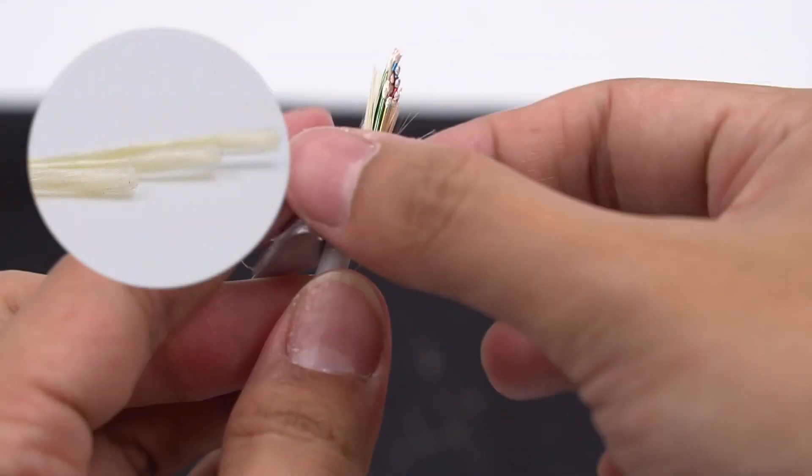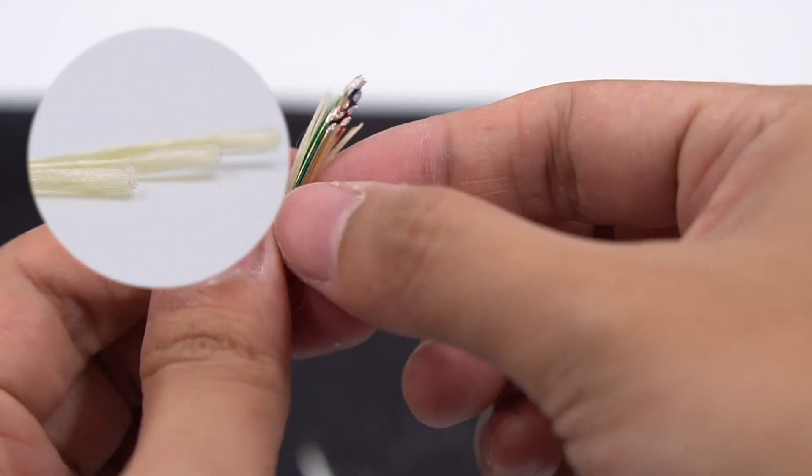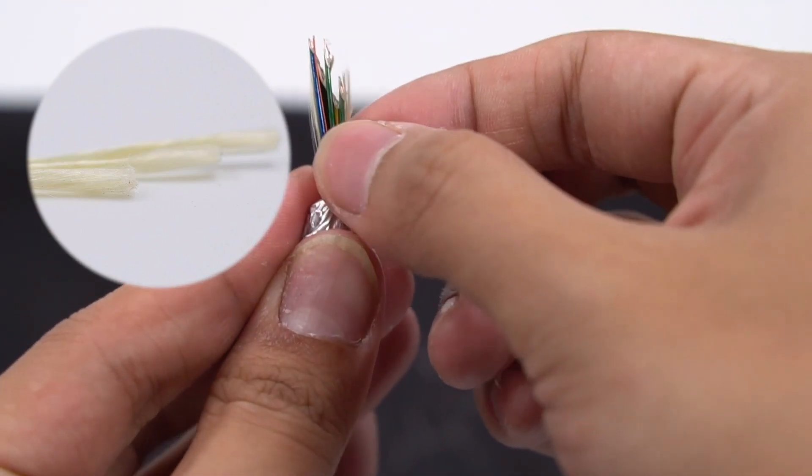Of course, there are three kevlar fibers between those cores, which are used to balance the tensile strength of the entire cable.